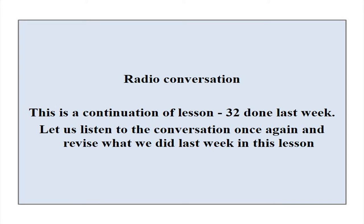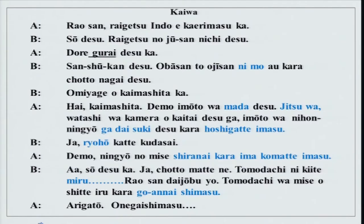Listen to this conversation between A and B. Rao-san, raigetsu Indo e kaerimasu ka? So desu, raigetsu no juusan nichi desu. Dono gurai desu ka? San shuukan desu. Obaasan to ojisan ni mo au kara, chotto nagai desu. O miyage wo kaimashita ka? Hai, kaimashita. Demo imouto wa mada desu. Jitsu wa watashi wa kamera wo kaitai desu ga, imouto wa nihon ningyou ga daisuki desu kara hoshigatte imasu. Jaa, ryouhou katte kudasai. Demo ningyou no mise shiranai kara, ima komatte imasu. Jaa chotto matte ne, tomodachi ni kiite miru. Rao-san, daijobu desu yo, tomodachi wa mise wo shitte iru kara, go annai shimasu. Arigatou, onegai shimasu.